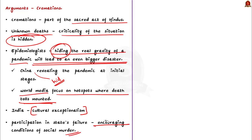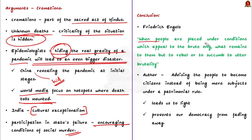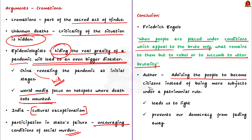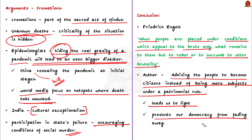By participating in the state's failure to fulfill its duty — such as supporting arguments against televising cremations — we are encouraging conditions of social murder. In essence, the author says India is witnessing different kinds of prejudice. According to Engels, when people are placed under conditions which appeal to violence, they have two choices: they will either rebel or succumb to brutality. The author advises people to become citizens instead of mere subjects under a patrimonial rule, because it not only leads us to light but also prevents our democracy from fading away.